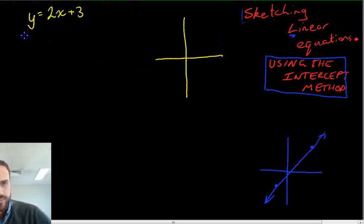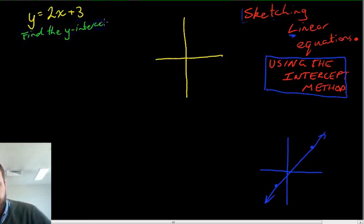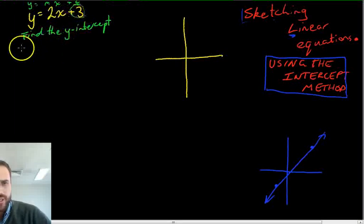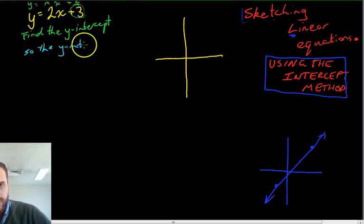First step is to find the y-intercept. You can see that this is written in the form y equals mx plus c. And you should also remember that the plus c is the y-intercept. So finding the y-intercept is really simple in this question. You just need to look here. And this is our y-intercept. So the y-intercept is positive 3. And on our Cartesian plane, 1, 2, 3, there it is. And that's going to be our first point here at 3.